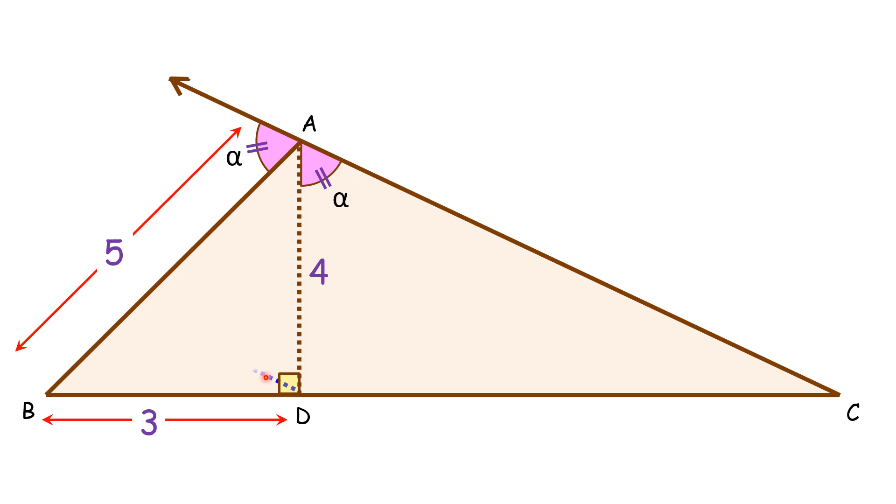Now, as these two lines are parallel to each other, AD is acting as a transversal, and these two angles here are alternate interior angles. Thus, this angle will be the same, alpha degrees.